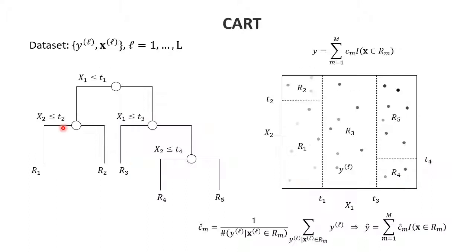More formally: suppose we have a dataset where Y is a response of interest and we have input parameters X with many samples. With a two-dimensional domain of X1 and X2, we try to cut up that domain into pieces. The question is: along which variable do we make the first cut, and where along that variable do we make the cut? This is essentially an optimization problem.